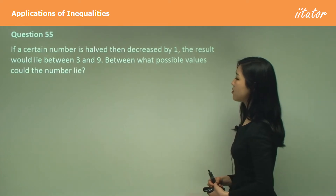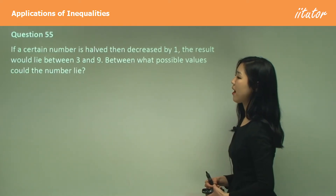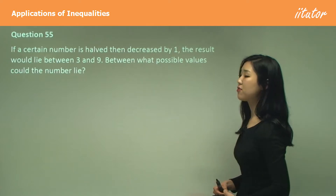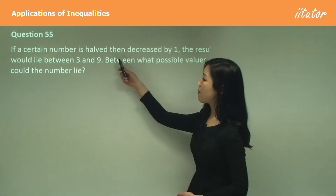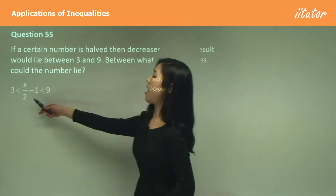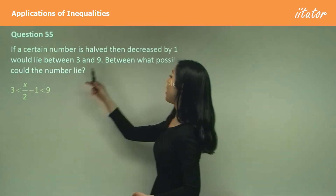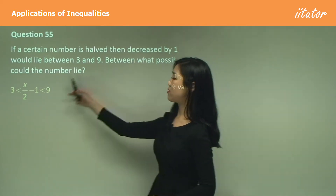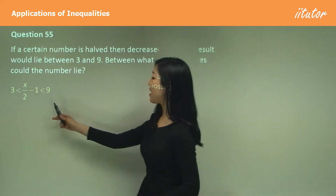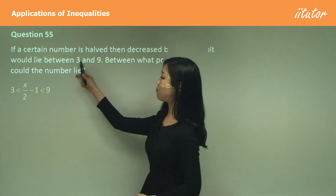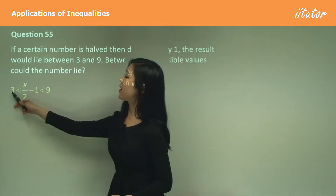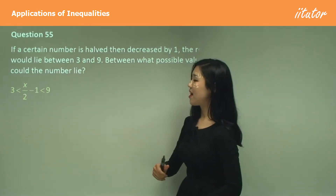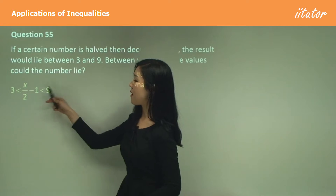Question 55: if a certain number is halved then decreased by 1, the result lies between 3 and 9 — between what possible values could the number lie? Write the inequality as x/2 − 1 is between 3 and 9.